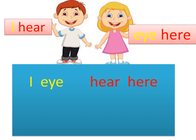Rohan's 'I' means self — main wala 'I'. And Rhea's 'eye' means the body organ, eye. And Rohan's 'hear' H-E-A-R means listening — sunne wala. And Rhea's 'here' H-E-R-E means a place — yahan wala. So now you know why both of them are confused. They are saying the same thing, but their meanings are different. Their sound is the same, but their meaning is different.